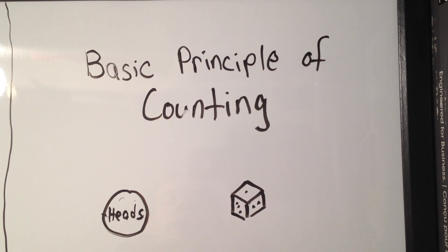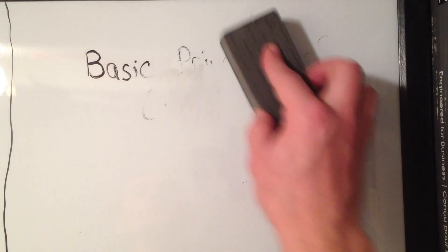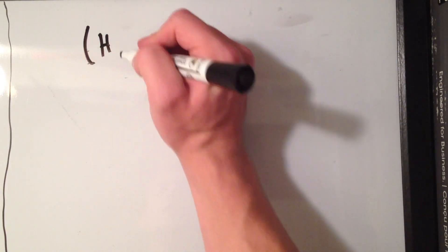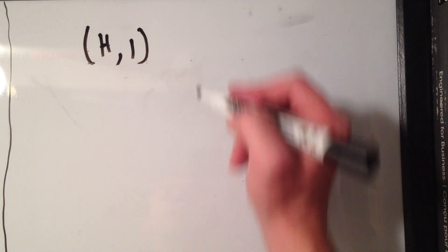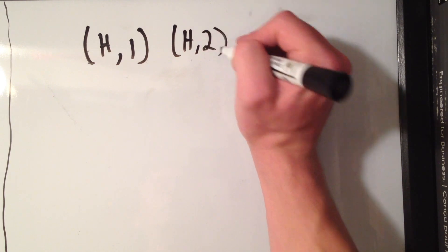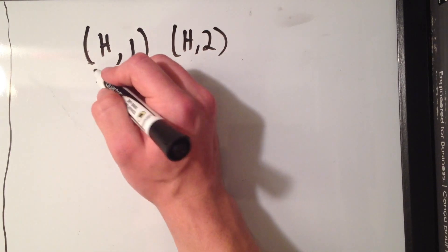So let's say you flipped a coin and you rolled a die and how many outcomes could you get with those two events happening at the same time. So we could list out all the possibilities. Say I got a heads, okay, and I got a one. And there's also possibility that I got a heads and I got a two, or there's a possibility that I got a tails and I got a two.